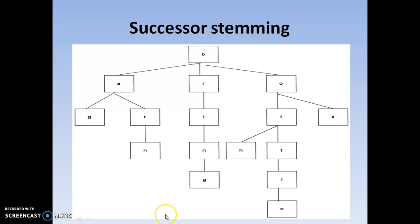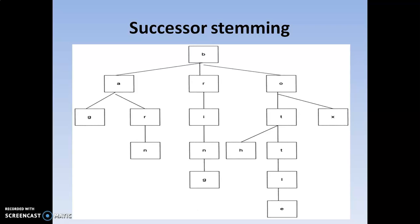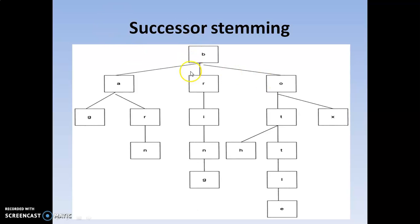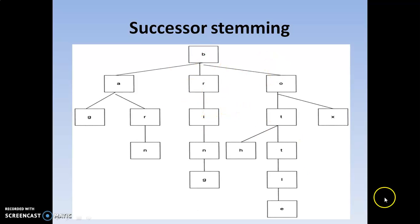If you want the complete word, go directly from root to the leaf to get the complete word — like bottle, box, bag. We have 4 complete words. The symbol tree contains the words: bag, barn, bring, body, box — 5 words in this particular tree. Arranging the words in this form is called successor stemming.